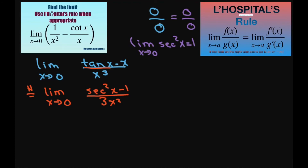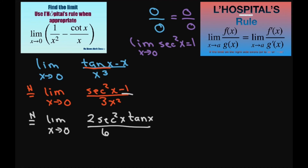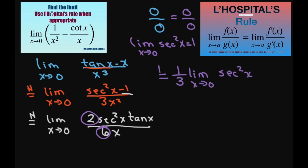So we're going to use L'Hôpital's rule again. The numerator becomes 2 secant squared of x times tan of x, and the denominator becomes 6x. This gives us 1 third times the limit as x approaches 0 of secant squared of x times tan of x divided by x.